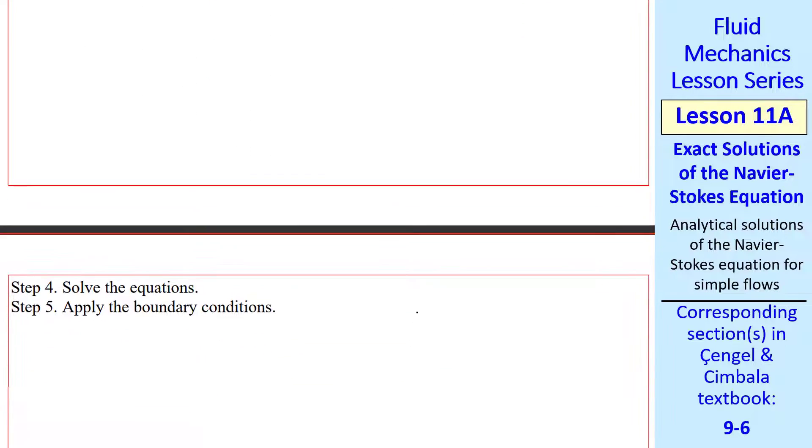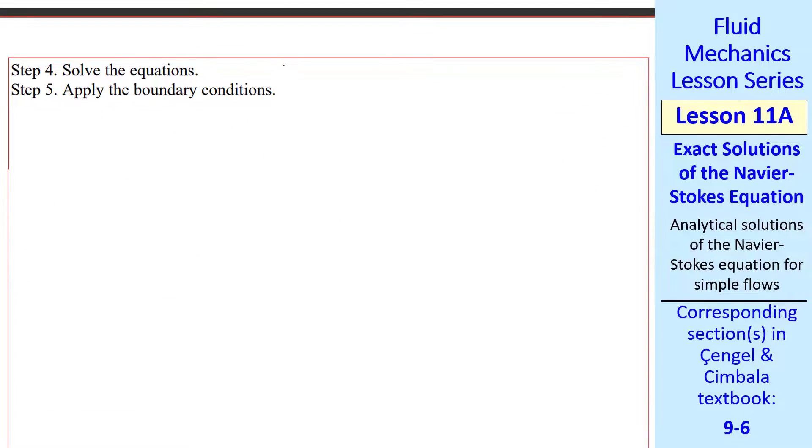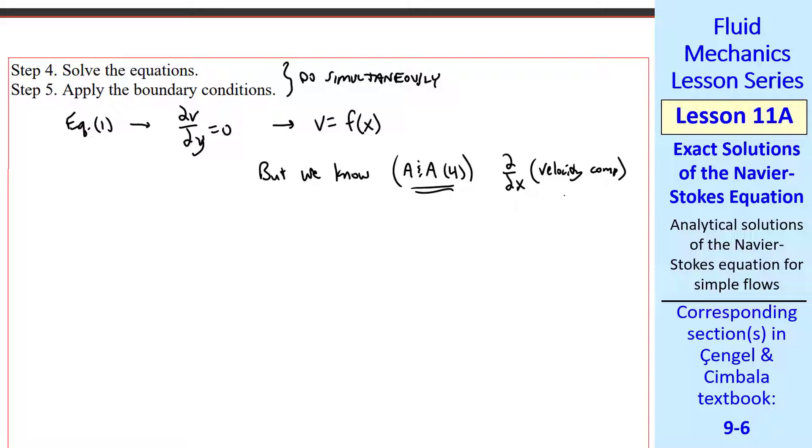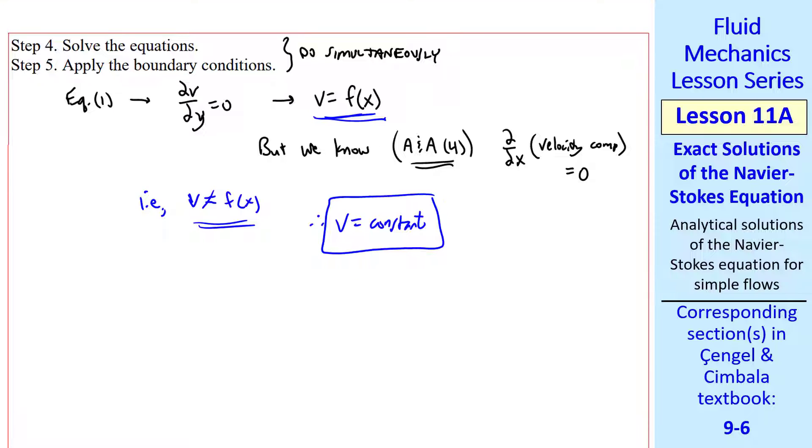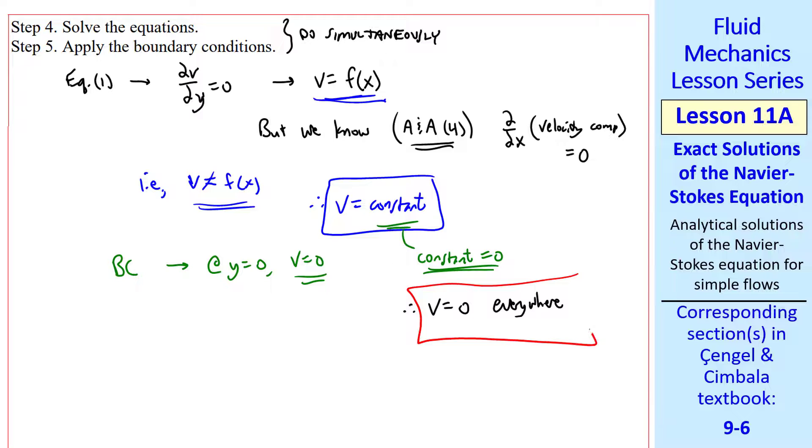Now we're ready to solve. I'll do step four and step five simultaneously. Equation one was del v del y equals zero. We integrate, remembering to add a function of the other variable. But by assumption four, del del x of any velocity is zero. So v is not a function of x. The only way v can satisfy this is if v is a constant. We apply the boundary condition: at y equals zero, v equals zero. So that constant must be zero. Thus v equals zero everywhere.